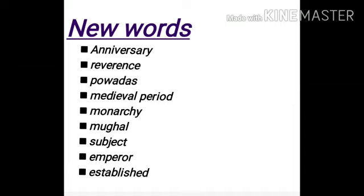Next is emperor — E-M-P-E-R-O-R — emperor. Emperor means ruler. Next is establish — E-S-T-A-B-L-I-S-H — establish means something that is newly formed, newly created, or newly made. It is called establish.